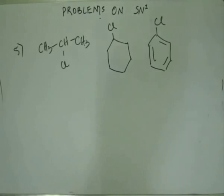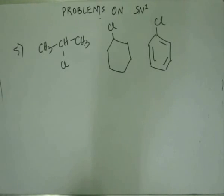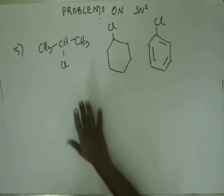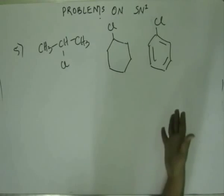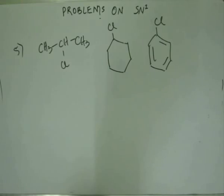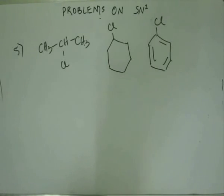We have three intermediates again and the job is the same. We are doing it over and over again so that we could become masters of this concept and understand organic chemistry to the bottom of our hearts. We have three substrates given and what we have to do is judge the stability of these three substrates, which will also give us the order of rate of reaction.